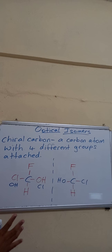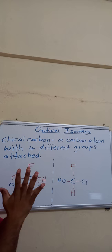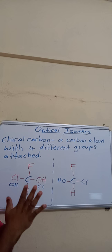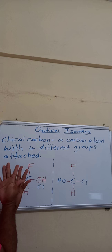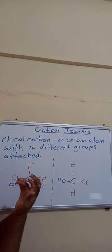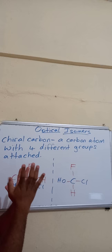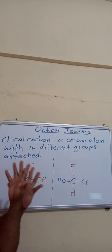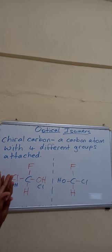A typical example is your hands. Your hands are basically mirror images of each other. When they are facing each other, everything aligns properly. But if you turn the palm — the back of your hand into the palm of the next hand — you realize the fingers don't align. The thumb is with the little finger. So it is non-superimposable.